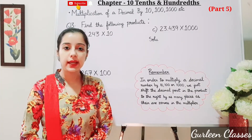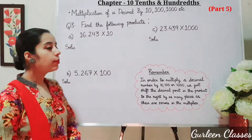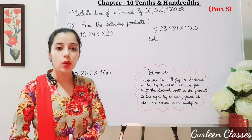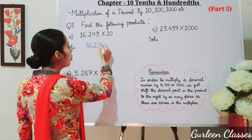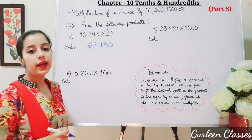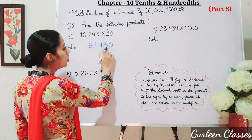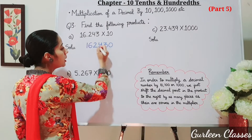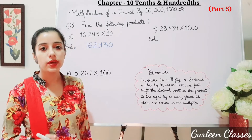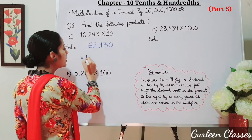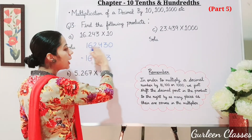Next topic: multiplication of a decimal by 10, 100, 1000, etc. Question number 3, find the following products. Part a: 16.243 into 10. First step is ignore the decimal point and multiply. So the answer is 1, 6, 2, 4, 3, 0. Now we will place the decimal point — after the decimal point there are 3 digits, so counting from the right: 1, 2, 3. We place the decimal point here. Since 0 is to the extreme right, we can remove it. So the answer is 162.43.